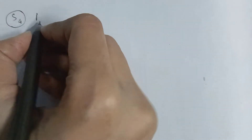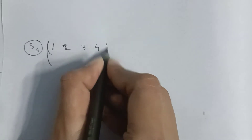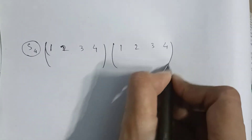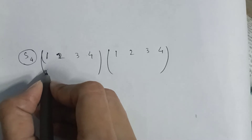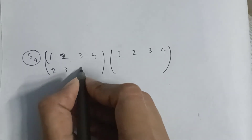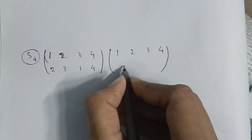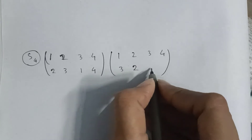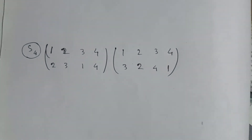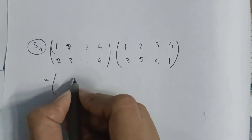We will learn how to multiply two permutations first, and then we will go to how to multiply two cycles. Let us take two permutations from S4: one two three four mapped to two three one four, and one two three four mapped to two three four one.